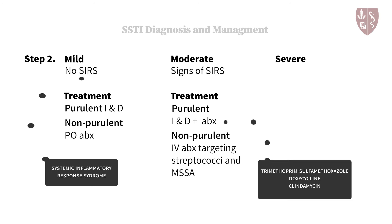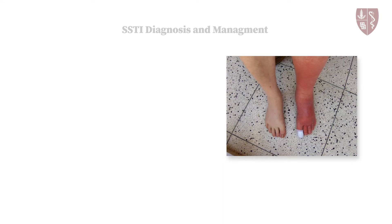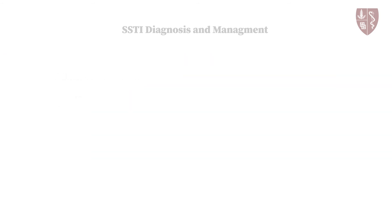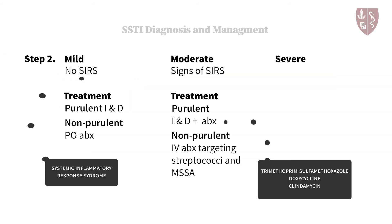Patients with non-purulent SSTIs of moderate severity should be treated with intravenous antibiotics directed against streptococcus and methicillin-sensitive staph aureus. As discussed earlier, the patient in this case had non-purulent cellulitis of moderate severity when she was admitted, and should have been started on antibiotics targeted against streptococcus and methicillin-sensitive staph aureus alone.